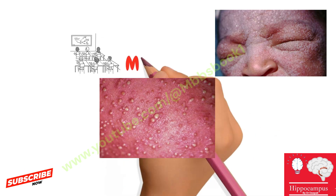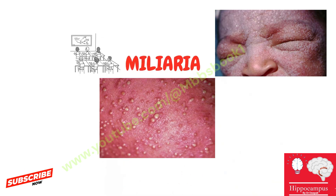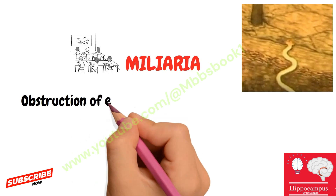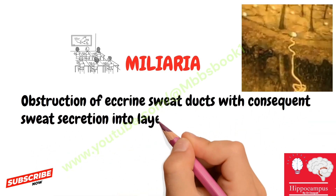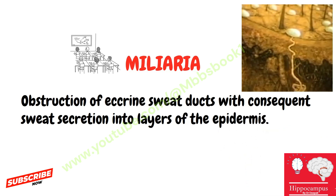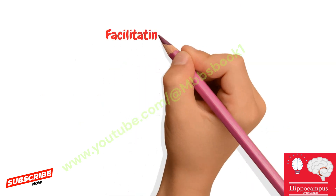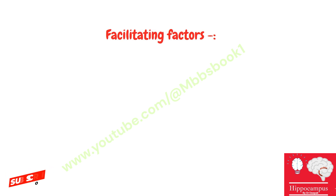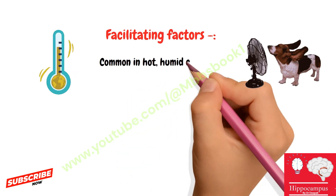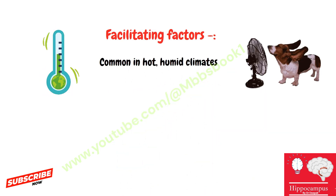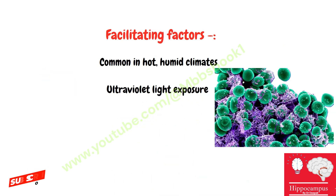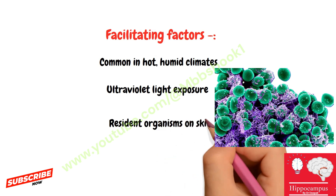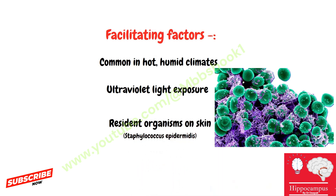Today's topic is miliaria. Miliaria results from obstruction of eccrine sweat ducts with consequent sweat secretion into layers of the epidermis. Facilitating factors include: first, it is common in hot and humid climates; second, ultraviolet light exposure; third, resident organisms on the skin like Staphylococcus epidermidis may be an etiological factor.